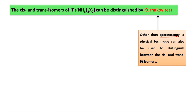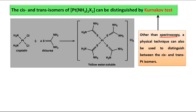For this test, we have to take the complex and treat it with thiourea. When we say urea, the structure is C double bond O with NH2 groups on both sides. For thiourea, this oxygen is replaced by sulfur.